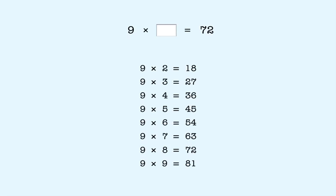The digit in the tens place of each answer is 1 less than the number multiplied. So in a problem like this, we know that the digit in the tens place in the answer is 1 less than the number that goes here. That means the answer is 8. 9 times 8 is 72.